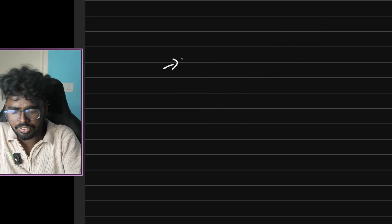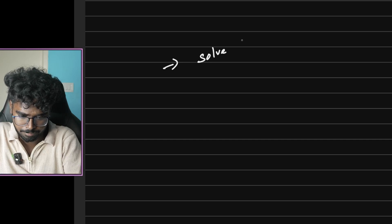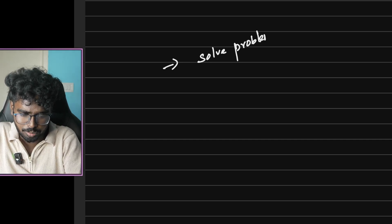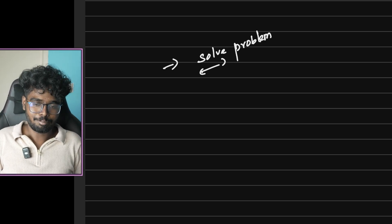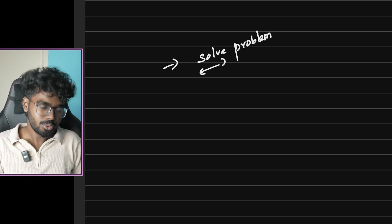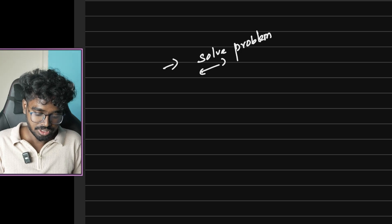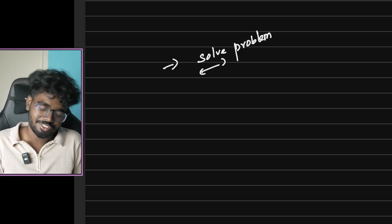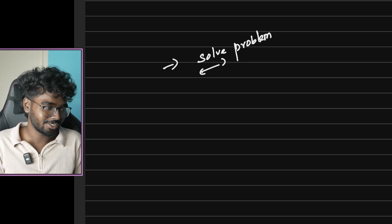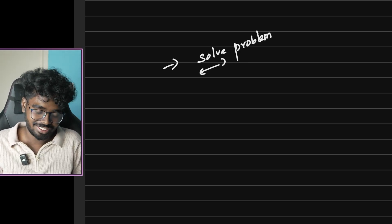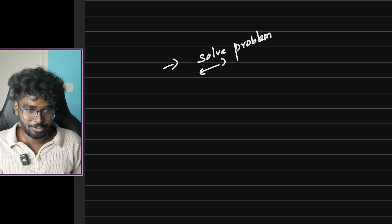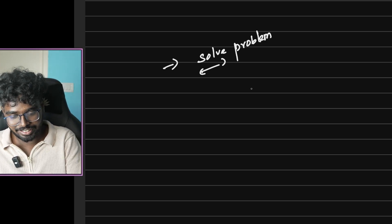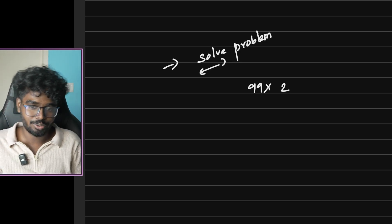To solve the real world's problems. What problem does a human solve? The computer is very fast. For example, if you do 25 into 4, you will say 100. Let's say 99 into 2 is 198.